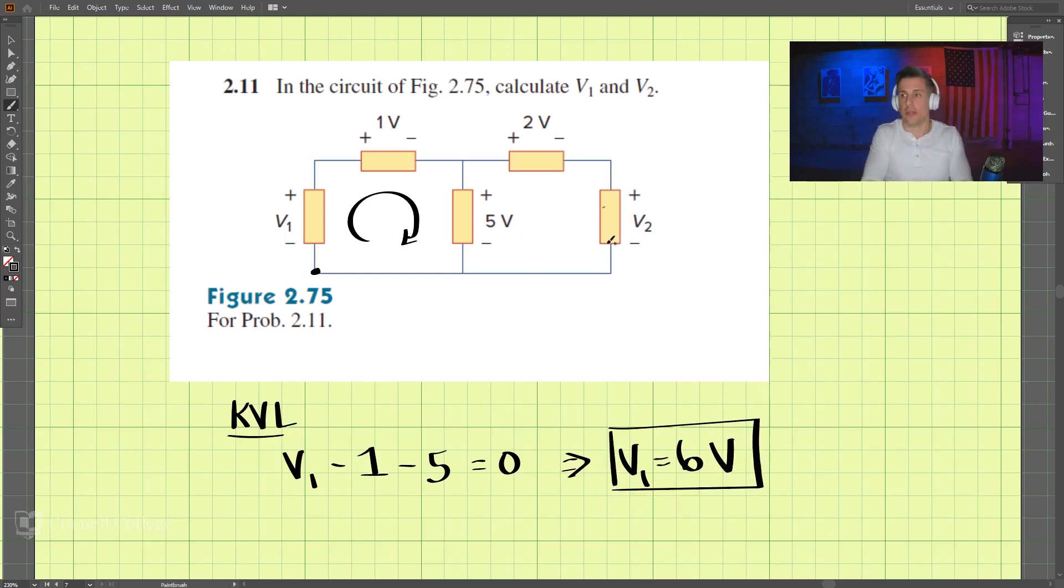And then we need to find v2 here. For v2, we use the same rule, Kirchhoff's voltage law, and we're going to go around this way. So we have 5 minus 2 because it goes plus to minus, minus v2 equals zero.